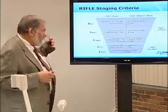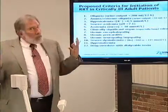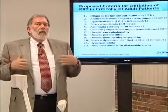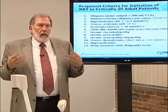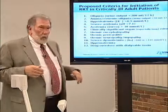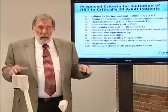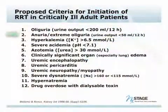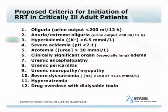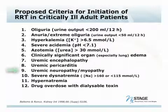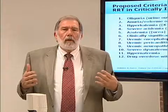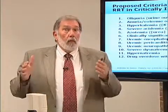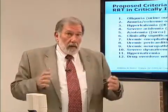The standard method for deciding when to start dialysis has been defined by Ronaldo Bellomo and others. The key indications include oliguria, anuria, hyperkalemia, severe acidemia, uremic encephalopathy, dysnatremia, and drug overdoses with dialyzable drugs. These are all well-established indications for renal-related dialytic support.